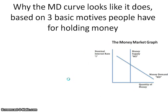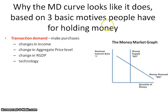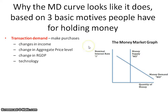There are three reasons why the money demand curve looks like it does. You want to be able to recognize how they connect with the motives that people have for holding money, or being able to spend money. The first one, which I think is utilized the most on AP exams, is the transaction demand.